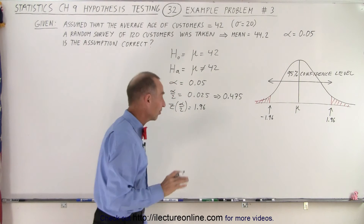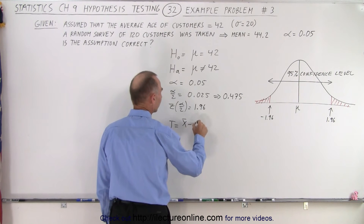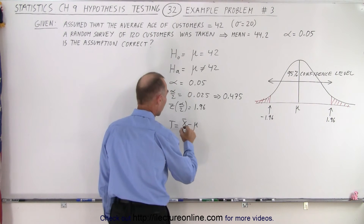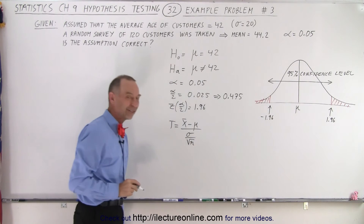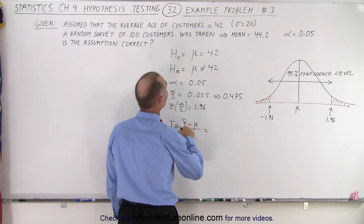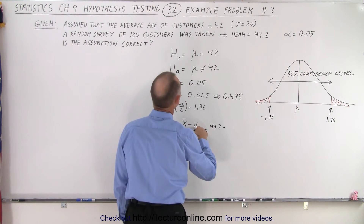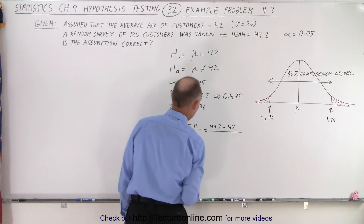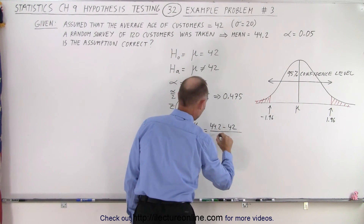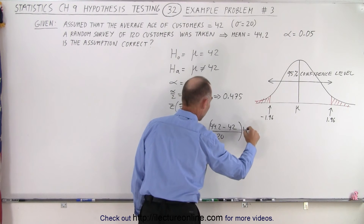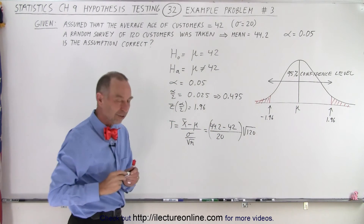Now we need to find the test statistic. By definition, the test statistic equals the sample mean minus the assumed population mean, divided by the population standard deviation, divided by the square root of the sample size. In this case: 44.2 minus 42, divided by 20, times the square root of 120.